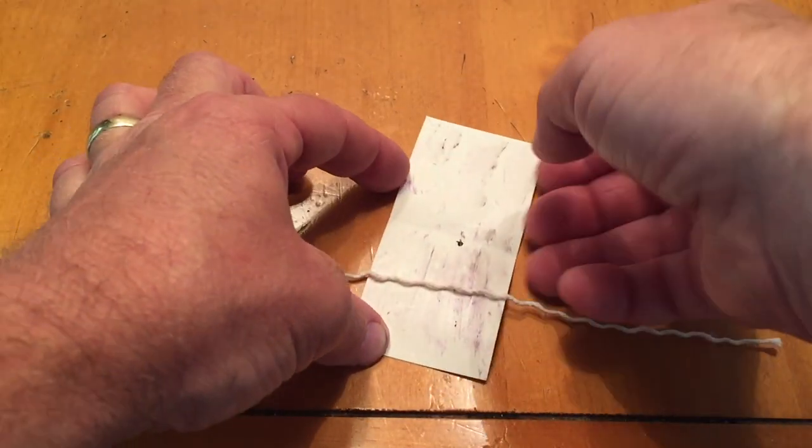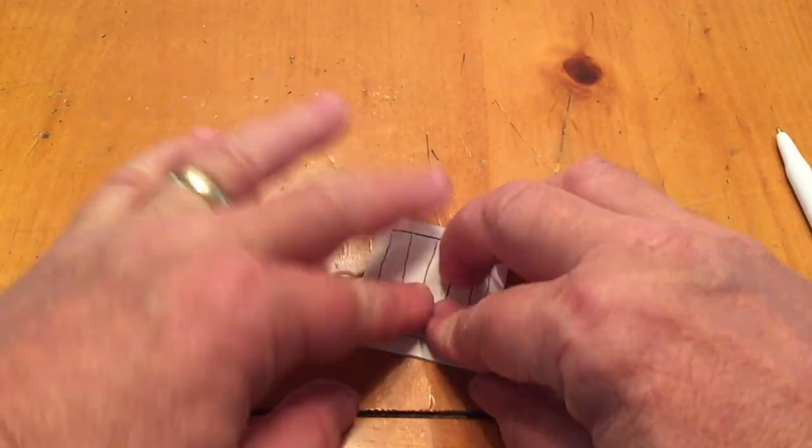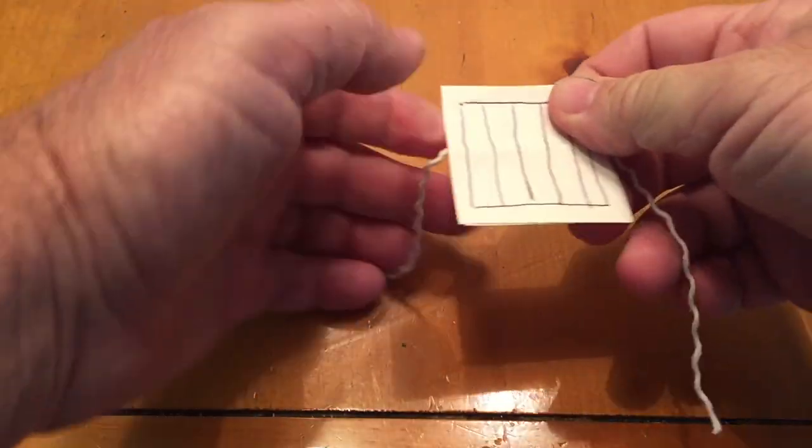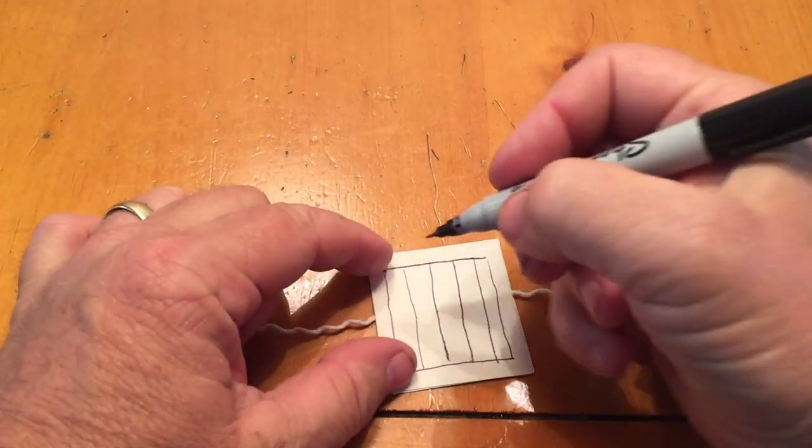And then when you fold it over, it should be right there where last time we cut out two circles and put them together. And then we have our image there.